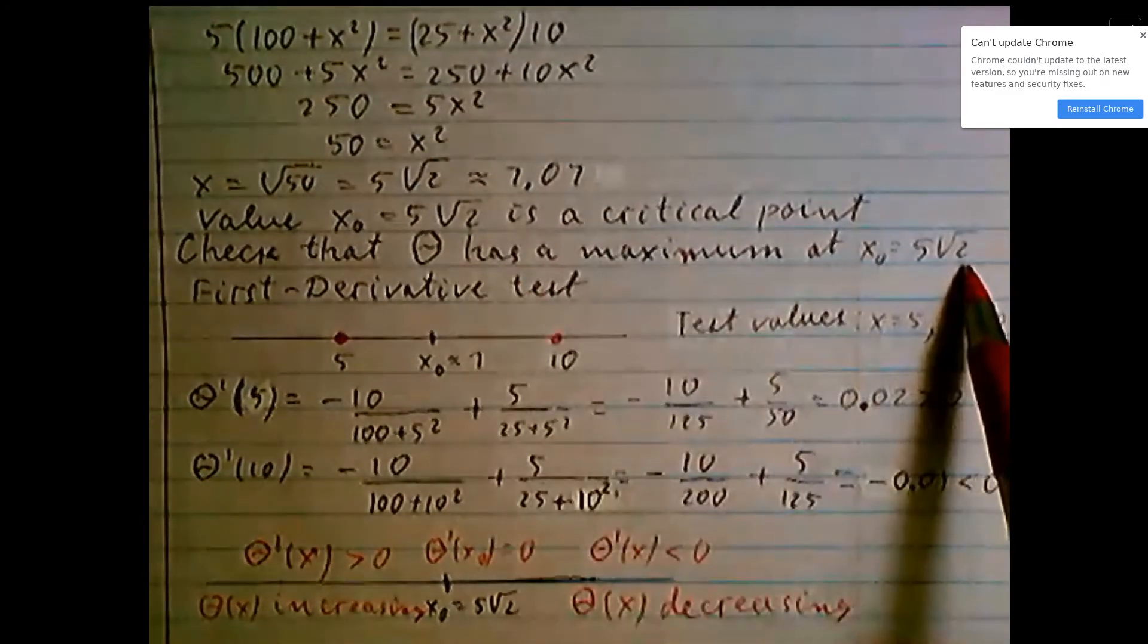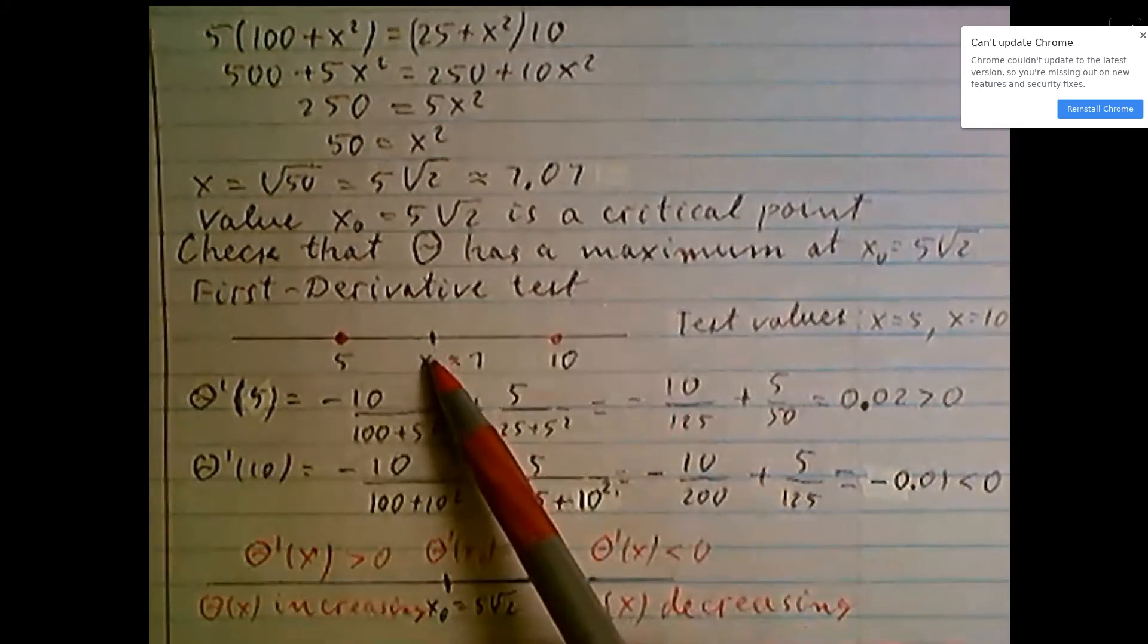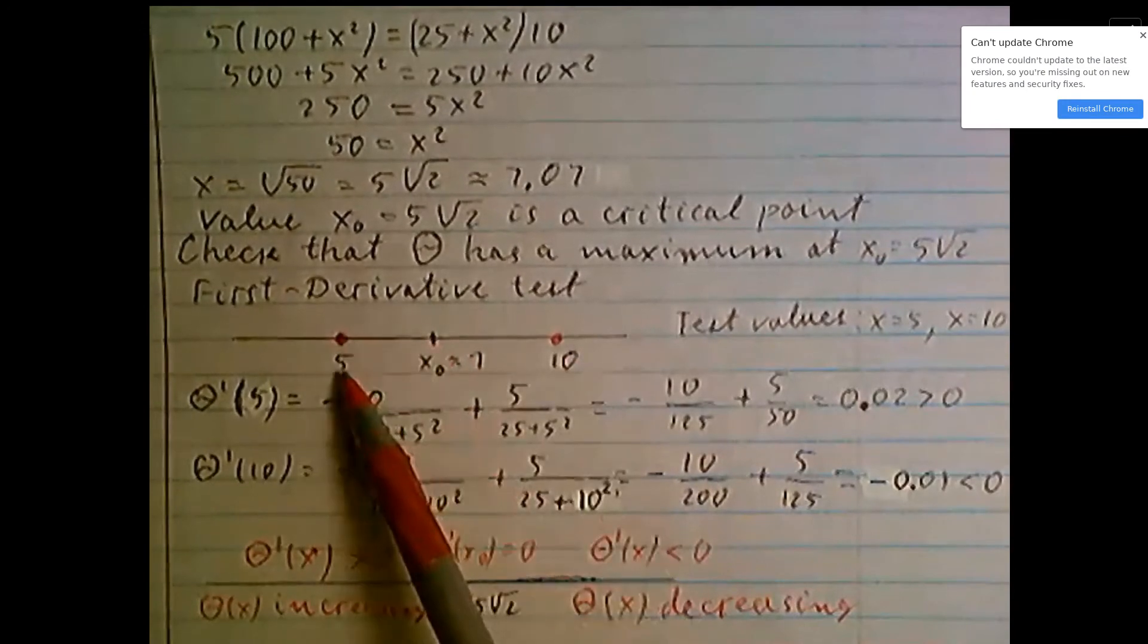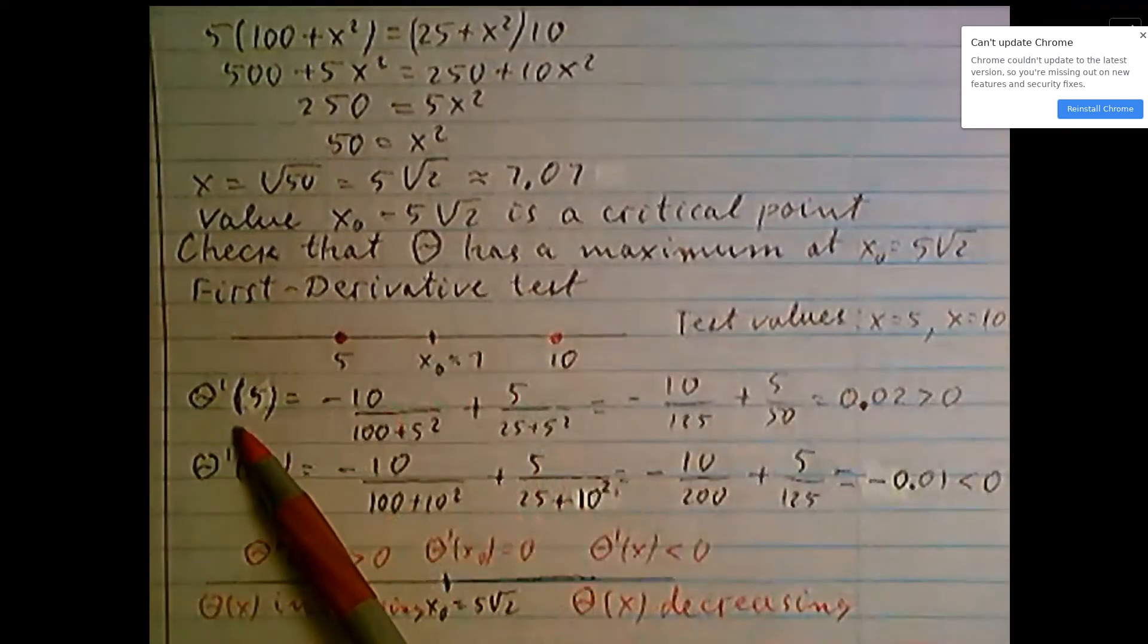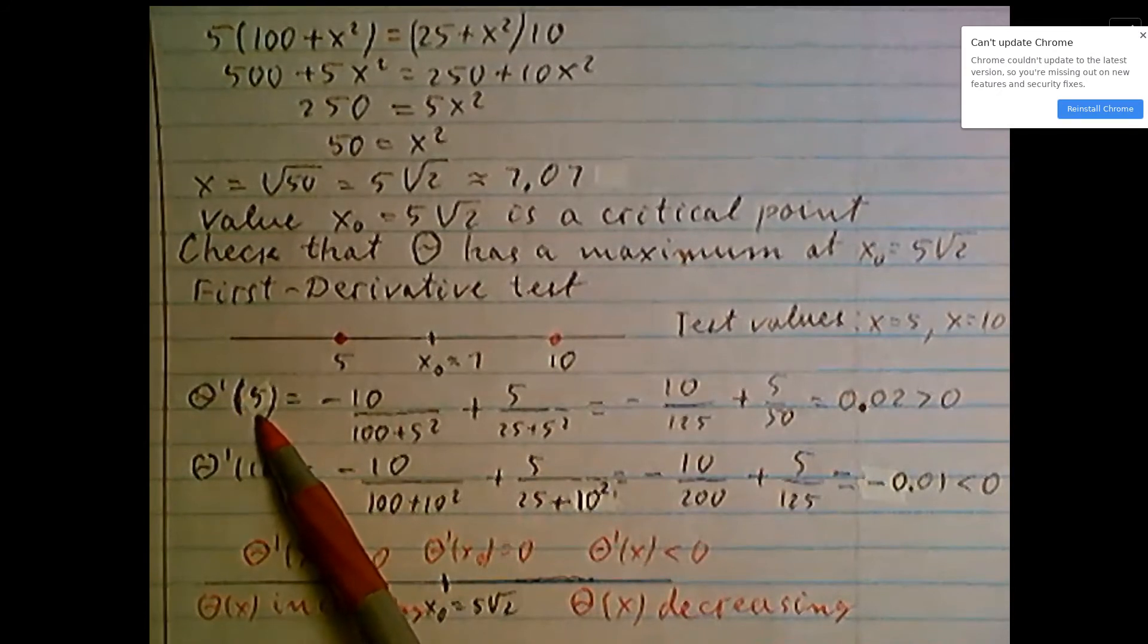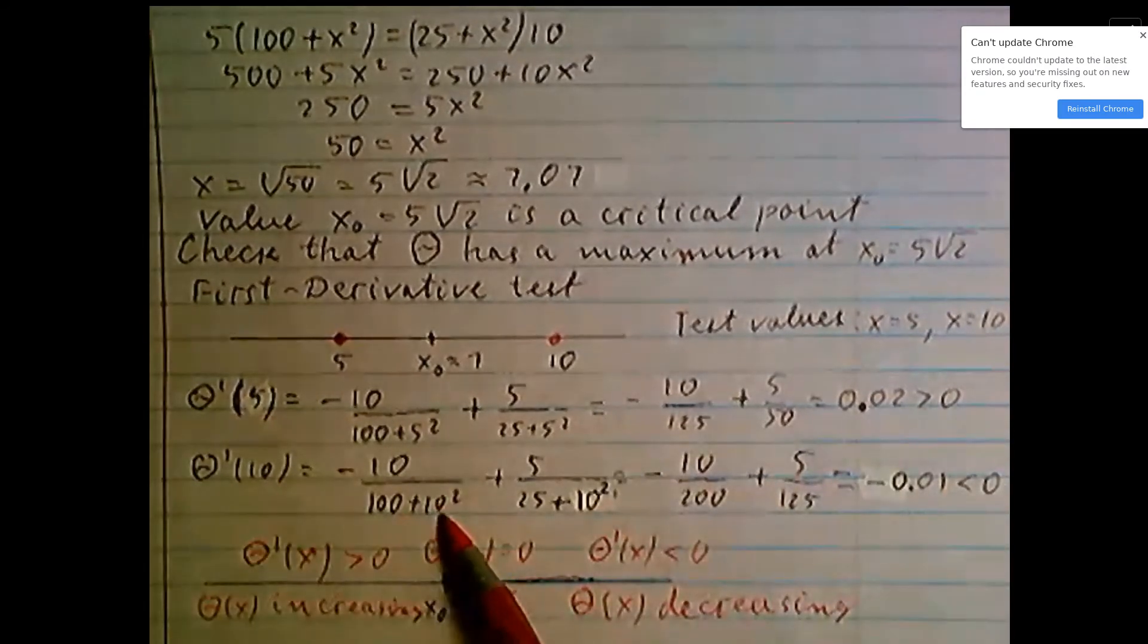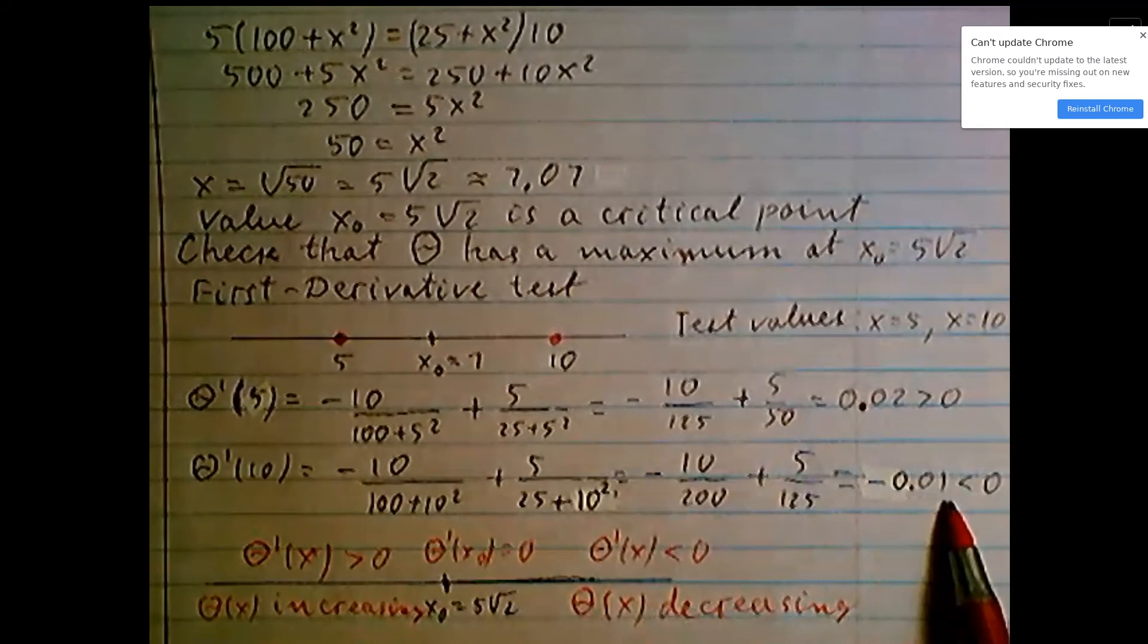So now we need to check that theta has a maximum at this point. Convenient to use first derivative test. So this is critical point x₀ approximately 7. Select two test values to the left and to the right: convenient to select to the left value x equal 5, to the right value x equal 10. Then calculate value of derivative theta prime at x equal 5: substitute 5, it's easy to evaluate, it will be 0.02, greater than 0. At x equal 10, substitute in the expression, evaluate: minus 0.01, negative.